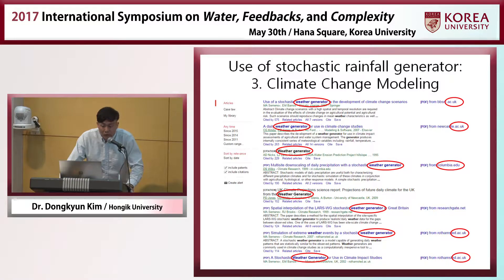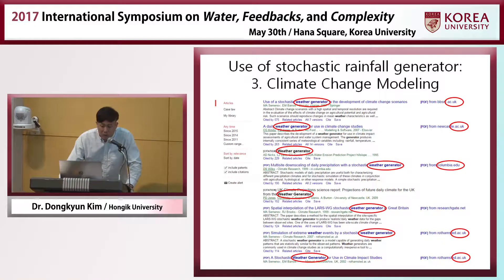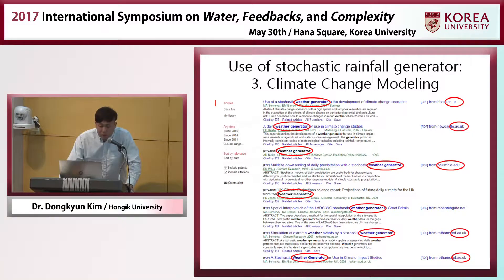The last and most recent use of this rainfall generator relates to the fact that we don't have any rainfall data for the future period. If we search for weather generator or rainfall generator, the most cited articles are always related to climate change. This rainfall generator can be coupled with the results of a global circulation model or regional circulation model to generate the rainfall scenario for a future period.